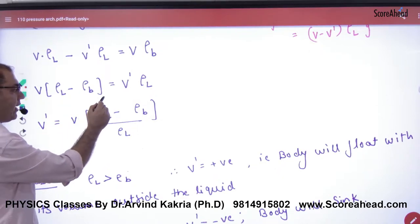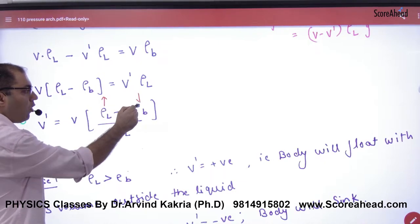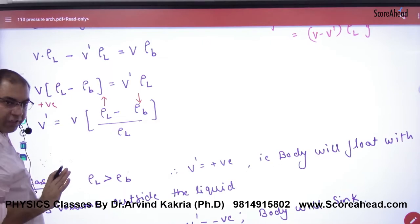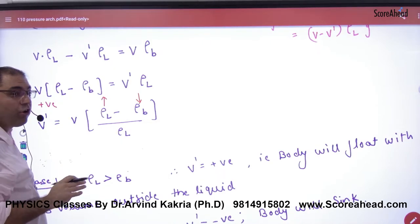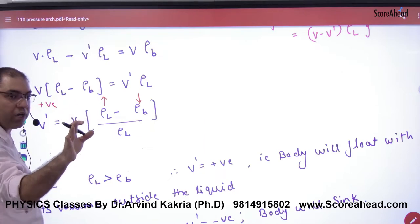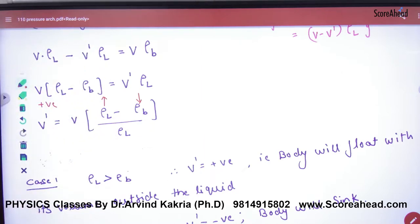If the density of liquid is bigger and the density of body is small, then what will V dash? Positive. V dash means how much volume you are showing in the air. So something will show in the air and the body will float. So in such a case, the body will float.